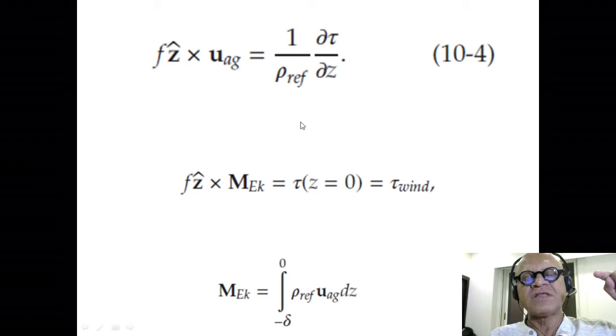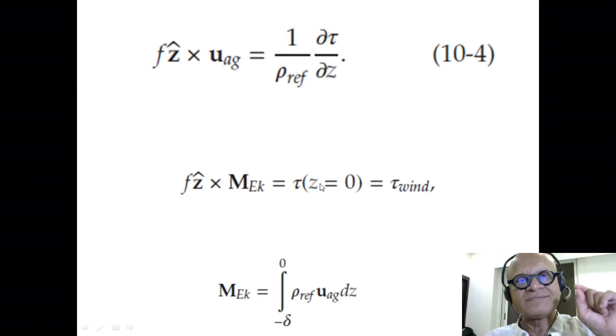The integral of the right side becomes τ at the surface, because at the bottom (minus delta) the wind stress goes to zero. Very simple—just integrate this equation and you end up with an estimate of Ekman transport, the wind-driven transport based on the given wind. Obviously, we haven't said what delta is.